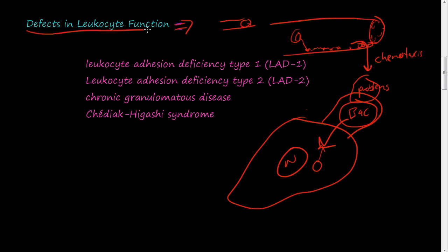If there are defects in leukocyte function, you can have pathologies. There are four pathologies that occur with such defects. The first is Leukocyte Adhesion Deficiency Type 1, or LAD1. In this disease, there are problems with the receptors on the leukocyte — they can't adhere or attach to the endothelial wall very well. And even if the cell does get out, it can't undergo chemotaxis and can't perform its normal functions.